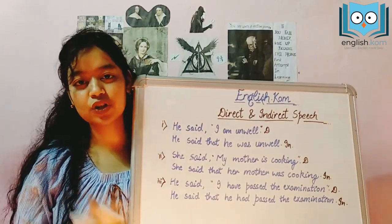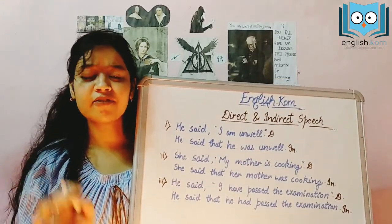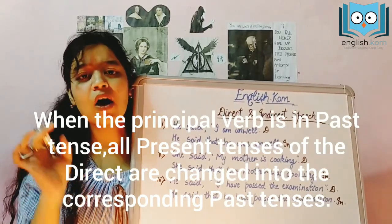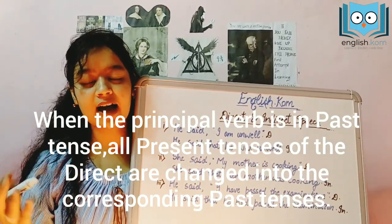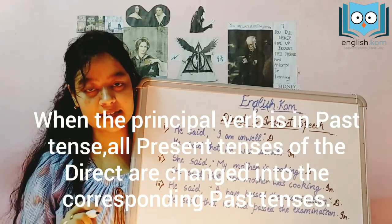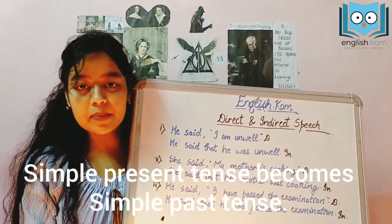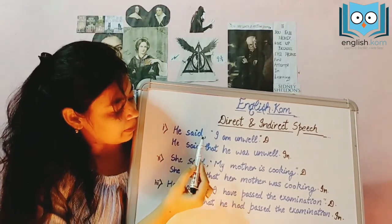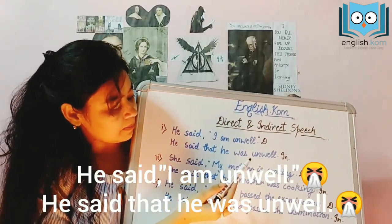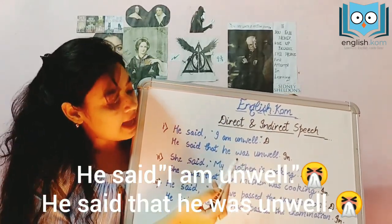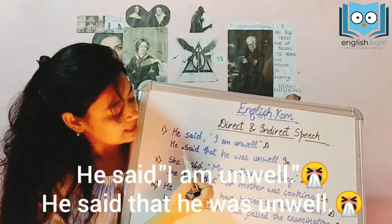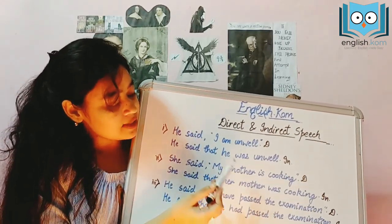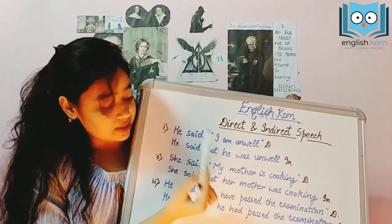Now the rules for conversion of direct to indirect speech. First, when the principal verb is in past tense, all present tenses in the direct speech are converted to their corresponding past tense. For example, a simple present tense gets converted to simple past. He said, 'I am unwell.' This is the direct form, and it converts to: he said that he was unwell.